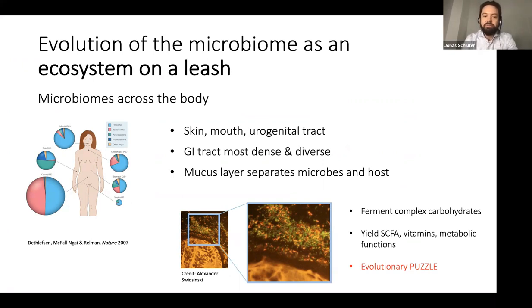But by far the most dense and diverse community lives in the gastrointestinal tract. In the GI tract, there's a thick mucus layer that separates the microbes from the host tissue. The microbes in the GI tract ferment complex carbohydrates, perform a lot of metabolic functions, and yield short-chain fatty acids that all tend to benefit the host. But this seeming beneficial relationship between a microbial community of diverse microorganisms and the host organism is an evolutionary puzzle.